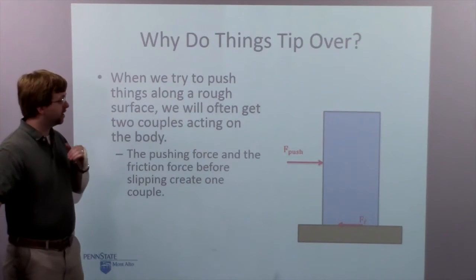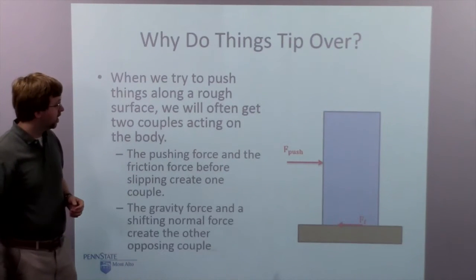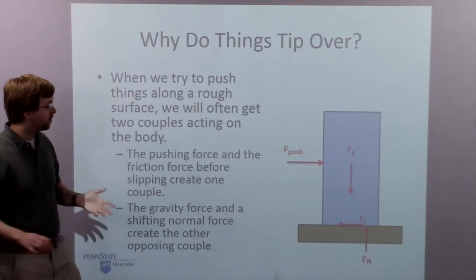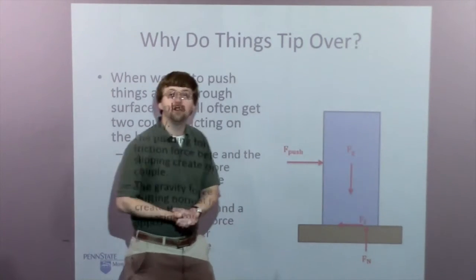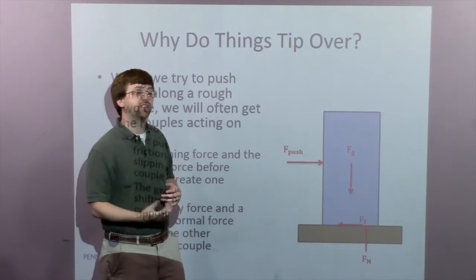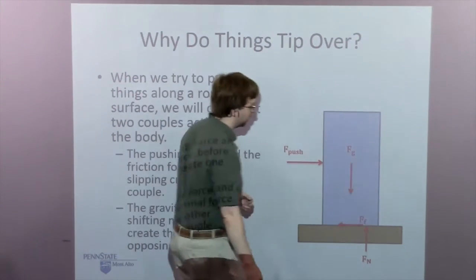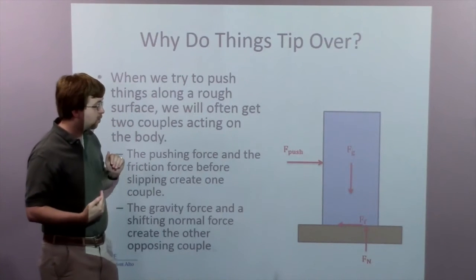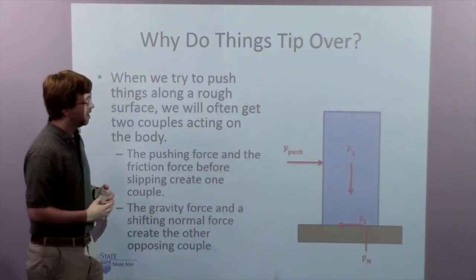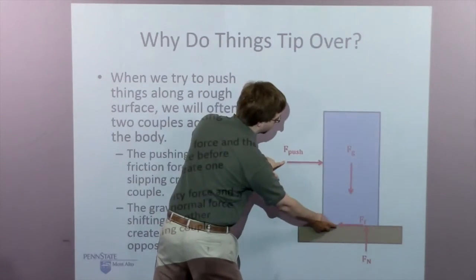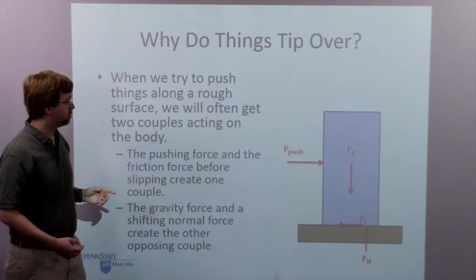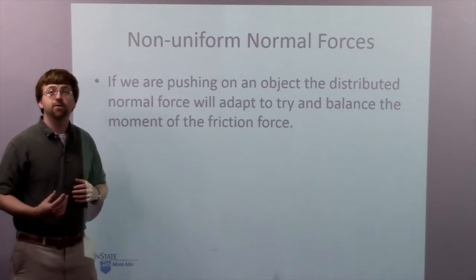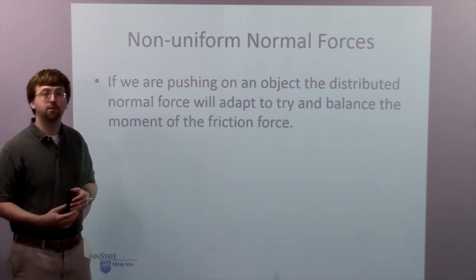What counteracts that — what prevents it from tipping over at the slightest push — is I'm going to have two other forces that are going to counteract that moment. I've got the gravity force, which is always going to be acting on the center of gravity or center of mass of the object, and I'm going to have the normal force down here. The normal force, if there's no pushing force at all, will be perfectly lined up. But the normal force can actually shift back and forth, and that shifting back and forth is what is used to counteract the moment exerted by the pushing force and friction force.